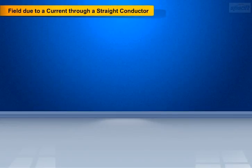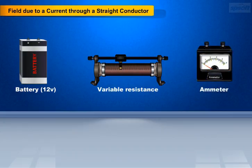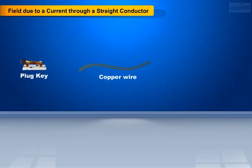Let us do an experiment for magnetic field due to current through a straight conductor. Apparatus required are: battery of 12 volts, variable resistance, ammeter, plug key, copper wire, and iron nails.